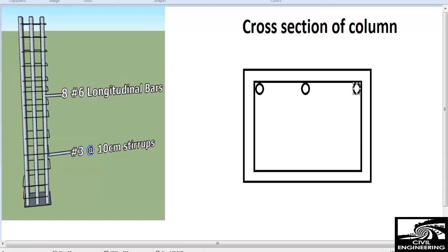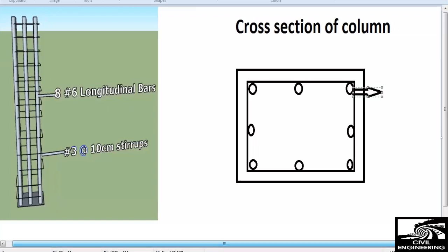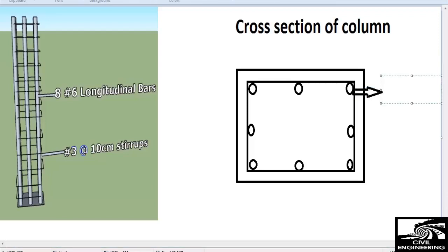I'm trying my best to show it accordingly. These are the eight number six longitudinal bars. You can see them on the left side as well. I am now writing it, these circles are representing the longitudinal bars.